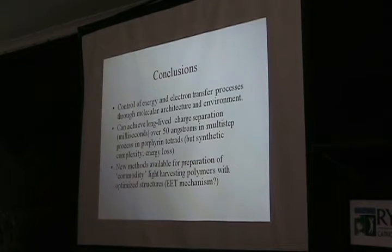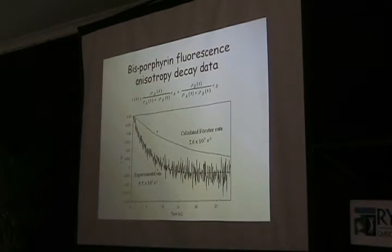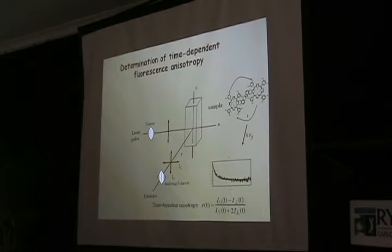Just to conclude, you can, through molecular architecture and environment, have a lot of control over electron and energy transfer processes. People are getting quite clever in what they can make these days. You can achieve long-lived charge separation, but the problem is synthetic complexity and energy loss. And I should mention, those polymers that I talked about at the end there, you can make hundreds of grams of this material. So, this is what we would call commodity light harvesting polymers. So, we're actually at the state where we can make very large amounts of these polymeric materials. So, if we can develop systems with photovoltaics using these, they might not be as expensive as some of the systems we're using now. Thank you.